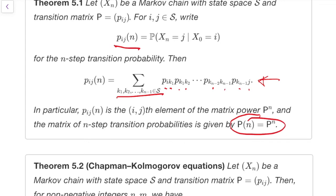So again, we can find the n-step transition probabilities by saying the matrix of them is the matrix P to the power of n, that is P times P times P times P.